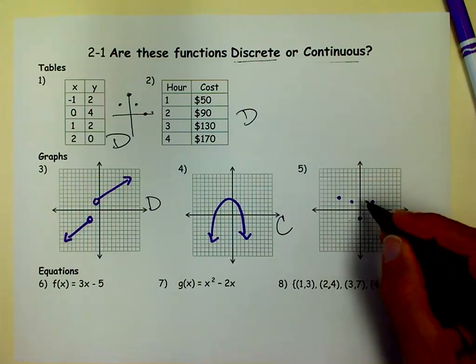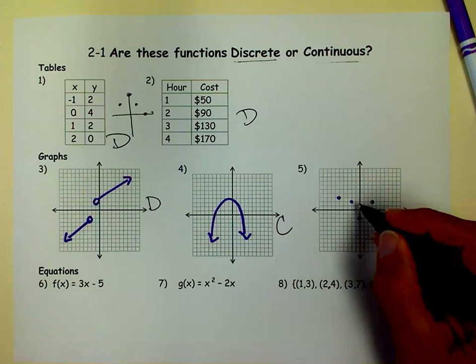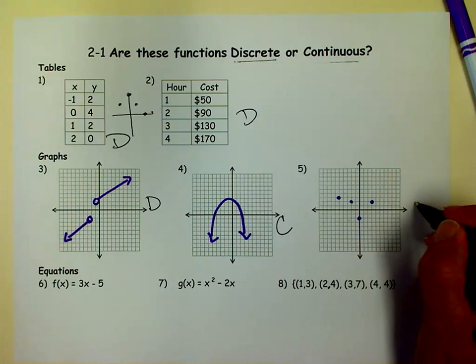And again, this is just a bunch of ordered pairs. This is a relation. To get from here to here, I have to lift up my pen. So that's discrete.